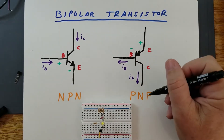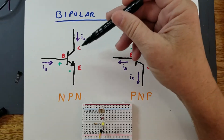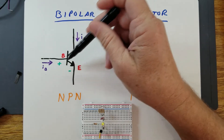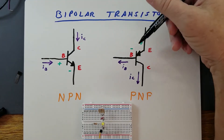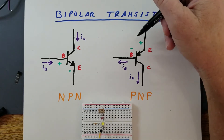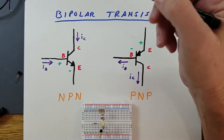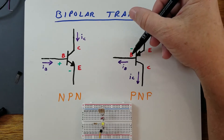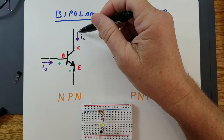The NPN transistor requires that the base be positive with respect to the emitter in order for it to properly function. The PNP transistor requires that the base be negative with respect to the emitter. An easy way to remember that is to look at this as a diode — the emitter would be the anode and the collector would be the cathode.